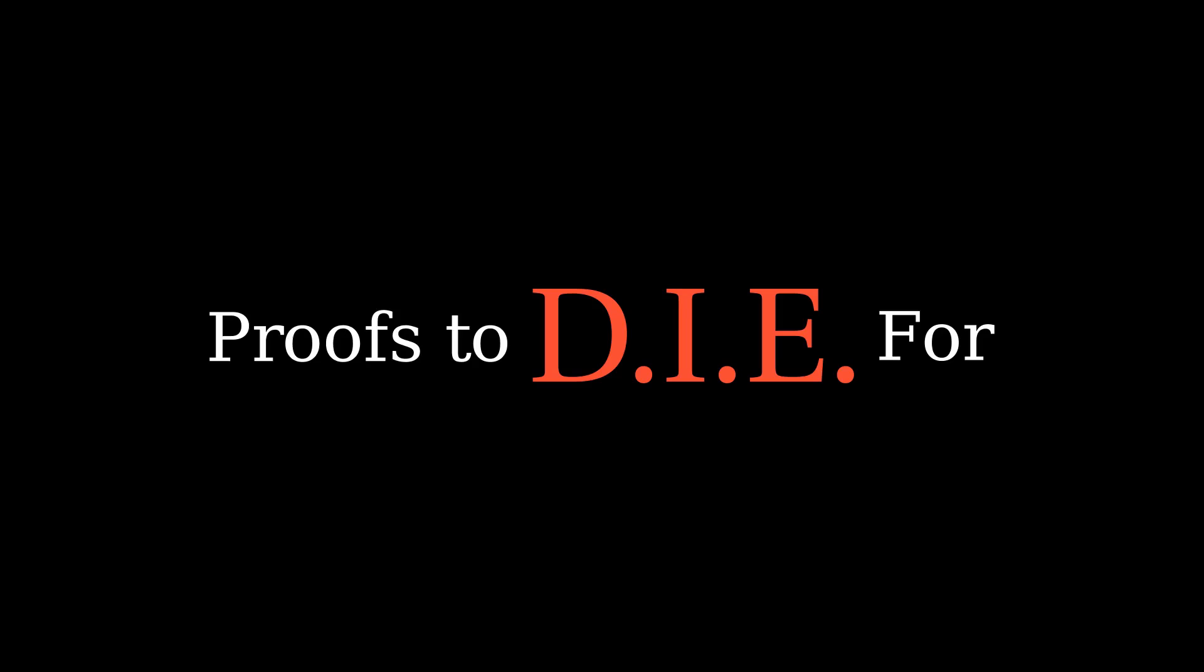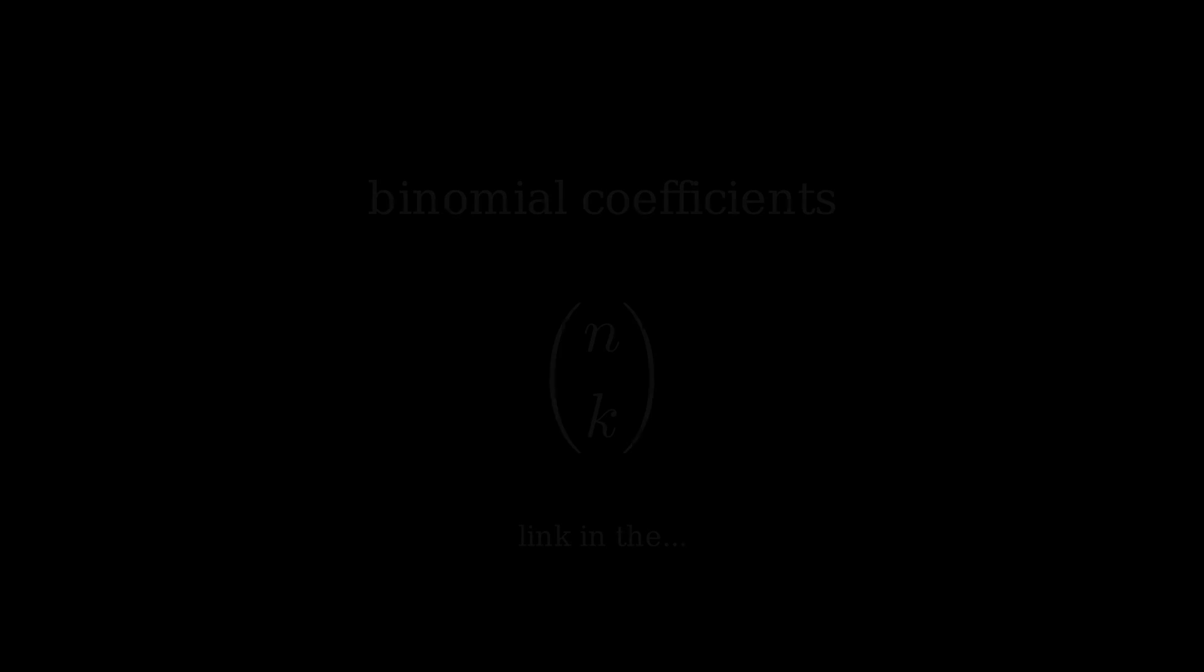By the end of this video we'll not only prove this identity combinatorially, but we'll develop a technique for handling many alternating sums. Oh, and no, it's not the principle of inclusion-exclusion. I'm shamelessly stealing the title and idea for this video from an article by Art Benjamin and Jenny Quinn linked in the description.